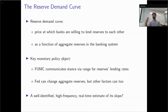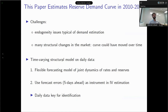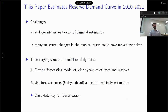The natural question is: can we have a well-identified, high-frequency — meaning daily — estimate of this demand curve and its slope? That's exactly what we do. We propose a time-varying structural estimation at daily frequency of the reserve demand curve over a period of 10 years, from 2010 until March 2021, encompassing basically the whole post-crisis era. There are two challenges: the typical endogeneity issues of any demand estimation, and the structural changes in the reserve market after the great financial crisis.